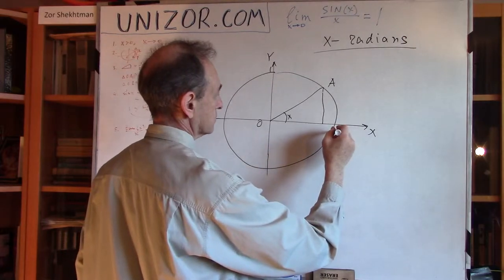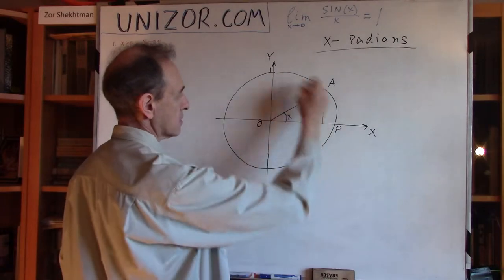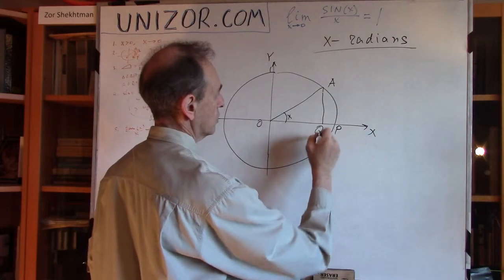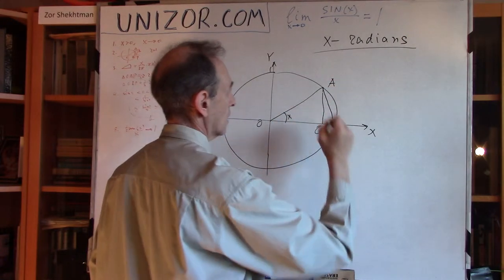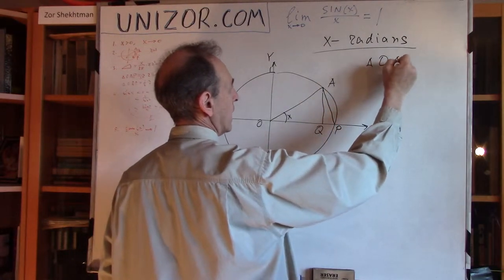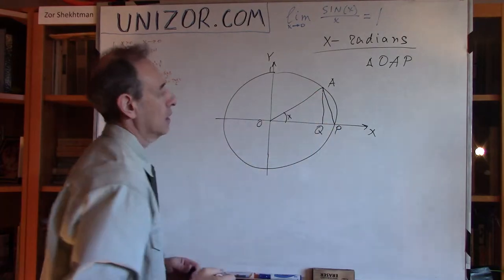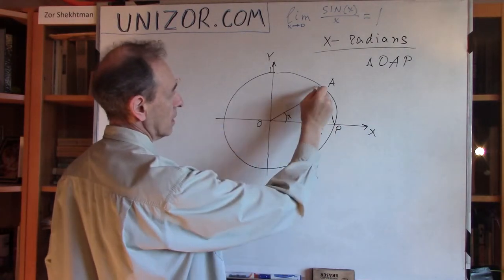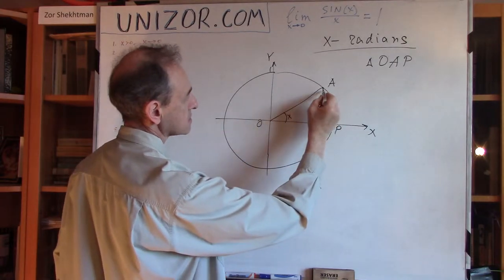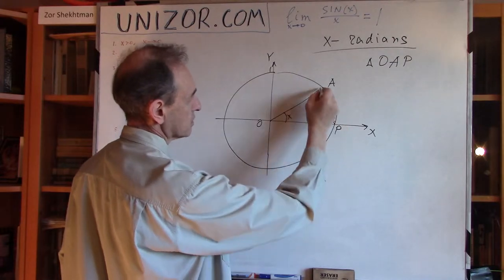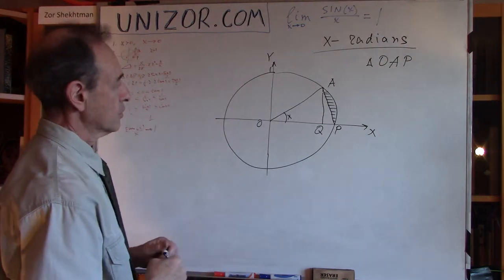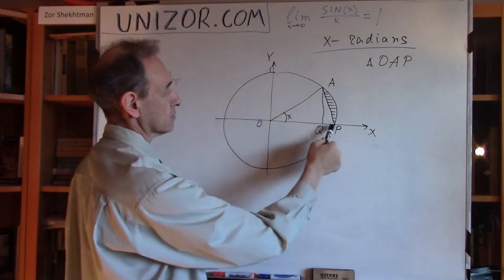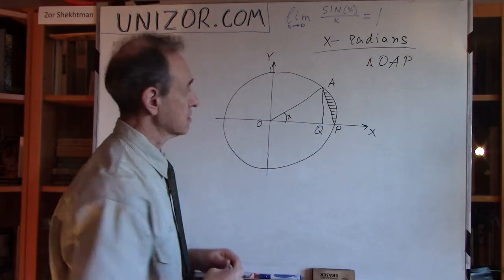Remember for definition of trigonometric functions, I was using the unit circle. So this is one, this is also one, and the angle, let's call the angle x, and this is x radians. Let's put this point A, so the angle x has a sine, which is basically an ordinate of point A on the unit circle, cosine being an abscissa. So the length of this is actually a sine. Now, let's put this letter P, that's where the unit circle intersects the positive direction of the x-axis. This would be Q, and let me connect A and P, and let's consider a triangle O, A, P.